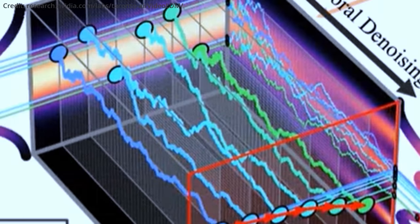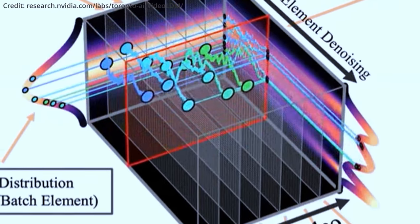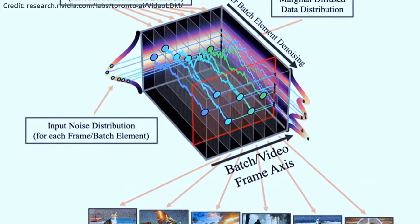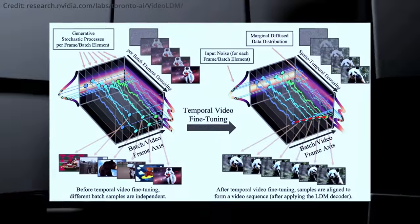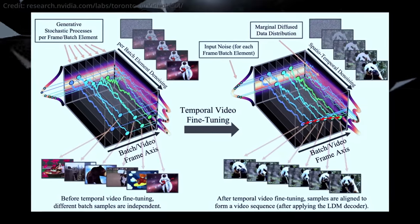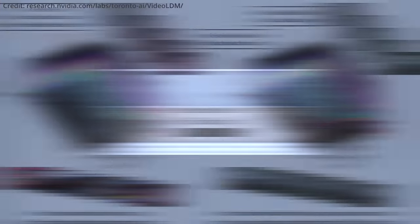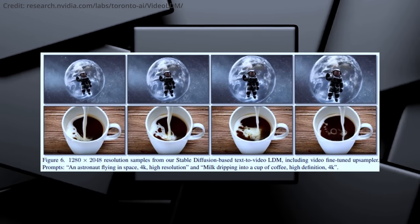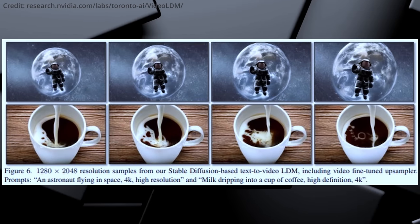Furthermore, NVIDIA's researchers have demonstrated the conversion of an existing stable diffusion model into a video model. This process involves fine-tuning the stable diffusion model with video data for a short period, followed by adding temporal layers behind each existing spatial layer of the network. These layers are then trained with video data. Time-stable upscalers are also trained to generate videos with a resolution of 1280 by 2048 pixels from text prompts.